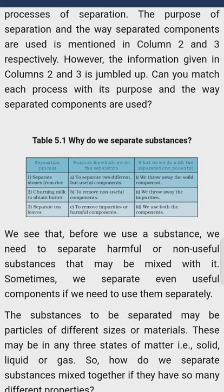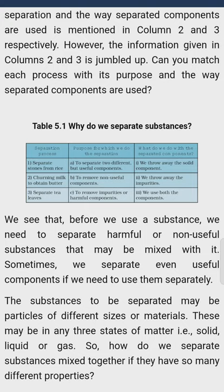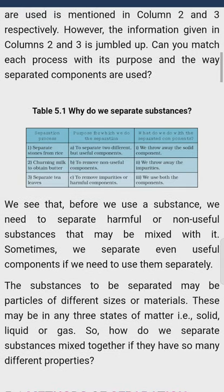Table 5.1 — Why do we separate substances? First separation process: separate stones from rice, यानि कि चावल से कंकड़ों को निकालना। हम यह इसलिए करते हैं क्योंकि चावल में कंकड़ impurities होते हैं, तो Column 2 में लिख देंगे C — to remove impurities and harmful components। कंकड़ों को निकालने के बाद हम उस चावल को खाने में use करते हैं और कंकड़ों को फेंक देते हैं — we throw away the impurities।